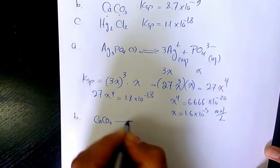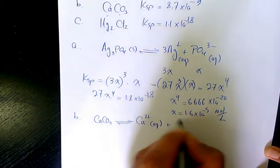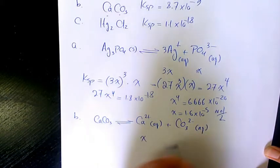CaCO3 dissolves and produces Ca2+ plus CO3 2-. That's going to be X and X.